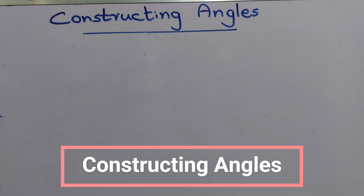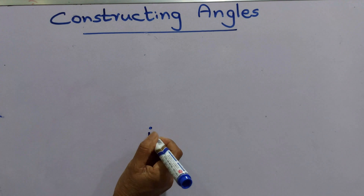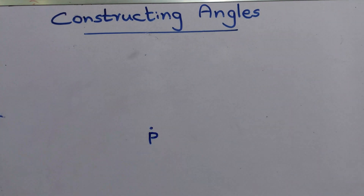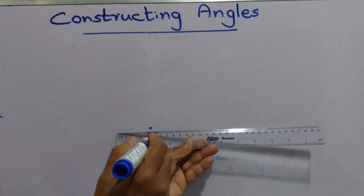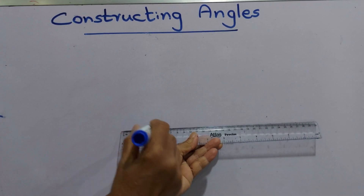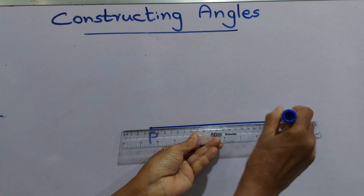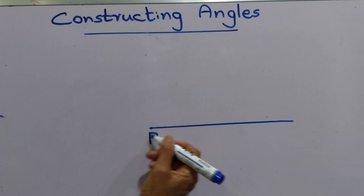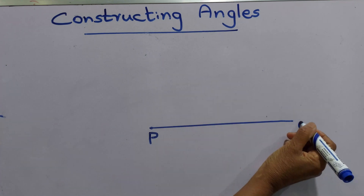Today we are going to construct angles. First step is we'll mark a point and name it as P. From point P, we'll draw a straight line. In our earlier lesson, you learned it's a horizontal line. We'll name it as PQ.